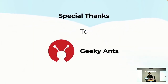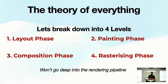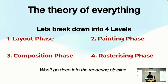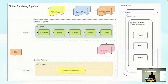Special thanks to Geeky Ants for arranging such an awesome event. Without taking much more time, let me start with my topic: how Flutter renders the app. I will break this talk into four theories. I've taken the title from Stephen Hawking's book 'The Theory of Everything,' which I've read and liked. The four theories are: the layout phase, the painting phase, the composition phase, and the rasterizing phase. We'll break each one down — if you don't understand now, it'll be easier as we go.